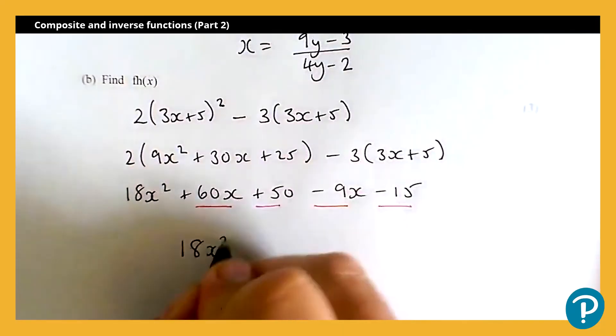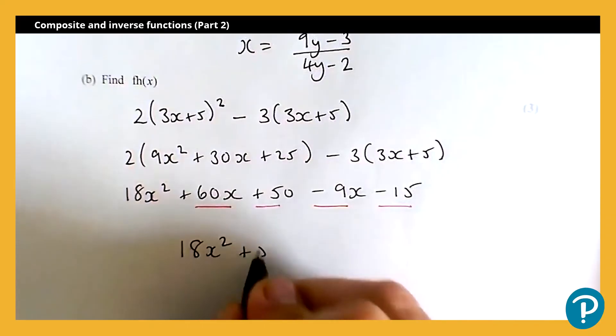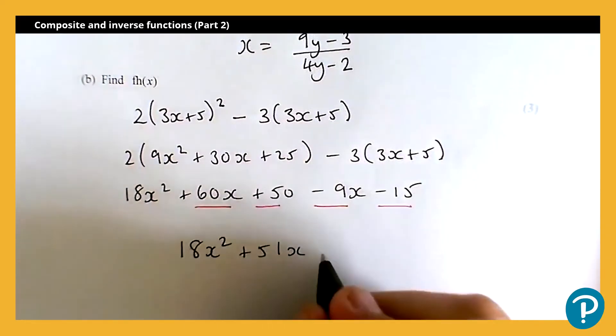So, we've got 18 x squared, 60 x subtract 9 x is 51 x, and 50 subtract 15 is 35.